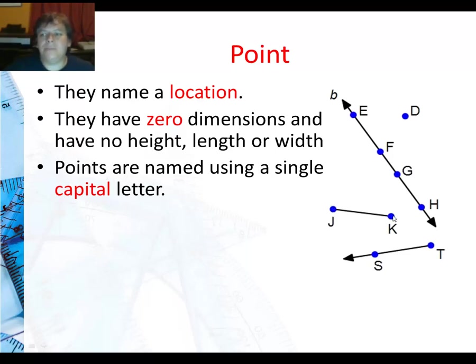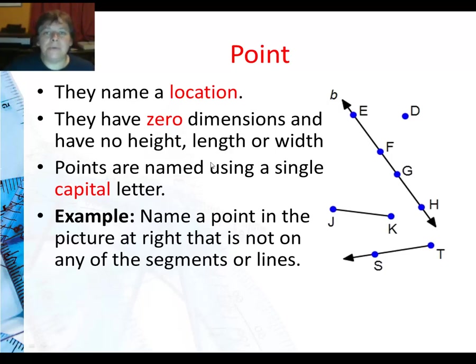So J is a point, K is. All of these next to the blue points or dots, those are all points. This little b here is not a capital letter, so that is not naming a point. So for our example, name a point in the picture at right that is not on any of the segments or lines. Well, that would only be point D.